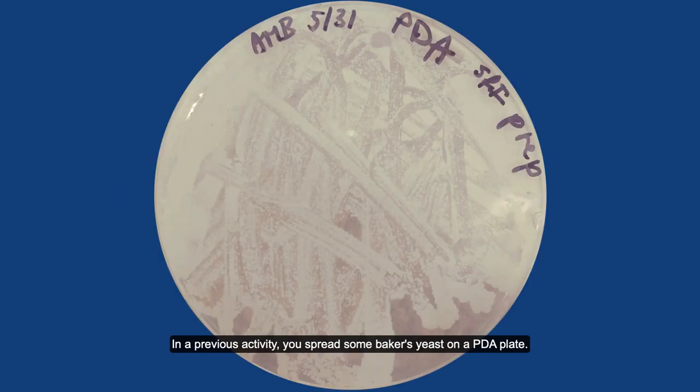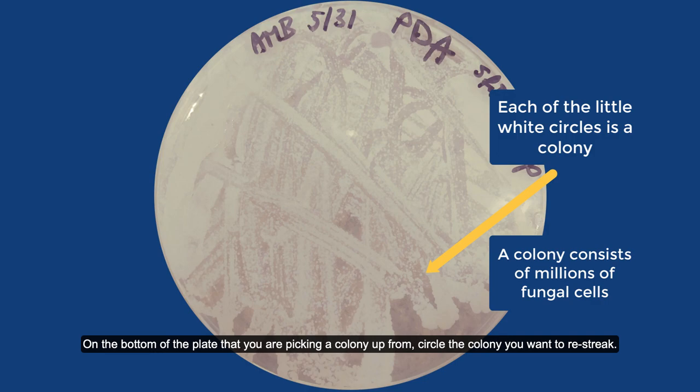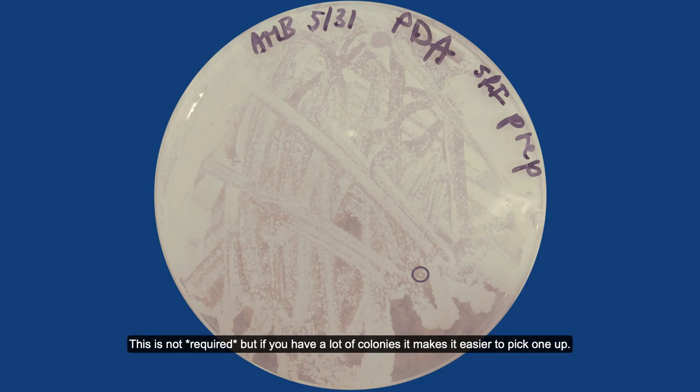In a previous activity, you spread some baker's yeast on a PDA plate. This single-celled fungus produces white colonies on the surface of PDA. On the bottom of the plate that you are picking a colony up from, circle the colony you want to re-streak. This is not required, but if you have a lot of colonies, it makes it easier to pick one up.